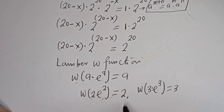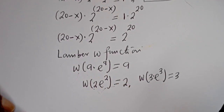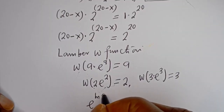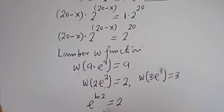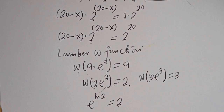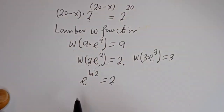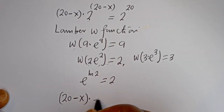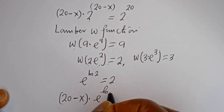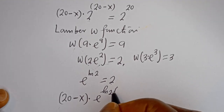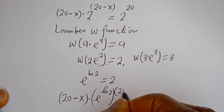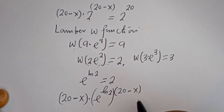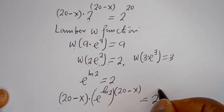Now, since e to the power of ln of 2 is equal to 2, we can replace the base 2 with e to the power of ln of 2. Then this equation becomes: 20 minus x multiplied by e to the power of ln of 2, to the power of 20 minus x, is equal to 2 to the power of 20.